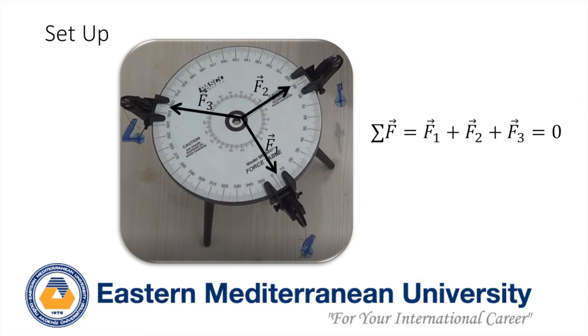Your aim is to show that there is no net force acting on the knot, which means you have to show F1 plus F2 plus F3 gives zero.